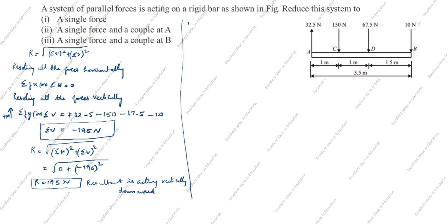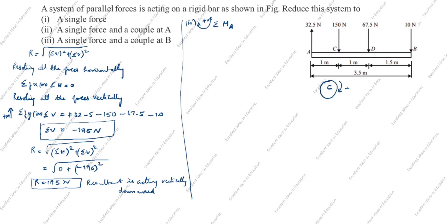Now we will calculate the second part: single force and a couple at A. The single force — the resultant — is already calculated. The couple at A means moment. ΣMₐ: clockwise is positive, anticlockwise is negative. A is at this point on the bar. The moment formula is force × perpendicular distance.